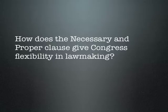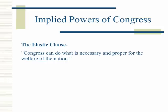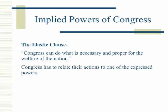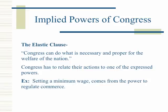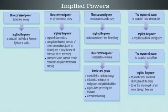How does the Necessary and Proper Clause give Congress flexibility in lawmaking? These are referred to as the implied powers of Congress — the elastic clause. Congress can do what is necessary and proper for the welfare of the nation, but must relate their actions to one of the express powers. For example, setting a minimum wage comes from the power to regulate commerce; establishing a military draft comes from the power to raise and maintain an army. The express power to borrow money implies the power to establish the Federal Reserve System. The express power to lay and collect taxes implies the power to punish tax evaders, regulate and license the sale of some commodities such as alcohol, outlaw the use of others such as narcotics, and require states to meet certain conditions to qualify for federal funding. The express power to raise armies and a navy implies the power to draft Americans into the military.